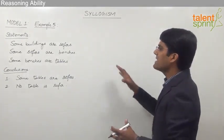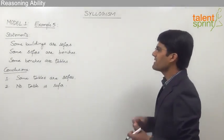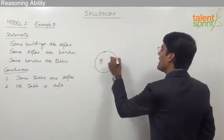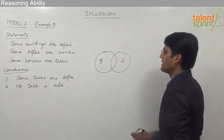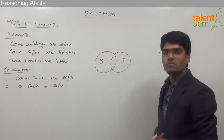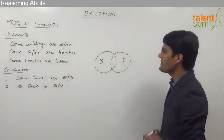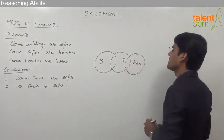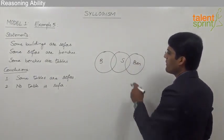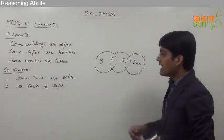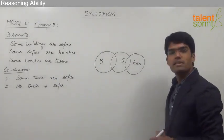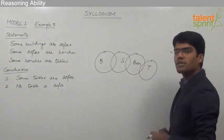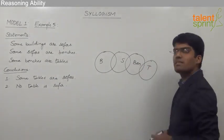Let us draw the basic diagram first. The first statement is 'some buildings are sofas', so buildings and sofas can be drawn with partial overlap. The second statement is 'some sofas are benches', so sofas and benches are drawn with a region where they overlap. The third statement is 'some benches are tables', so some of these benches are shown as tables.